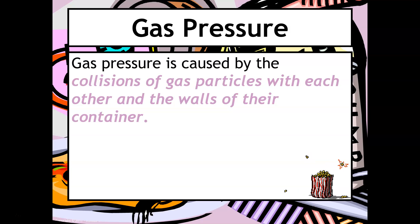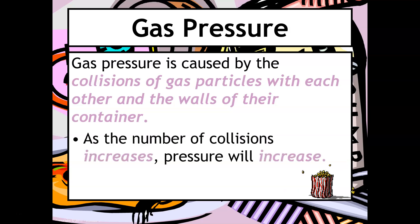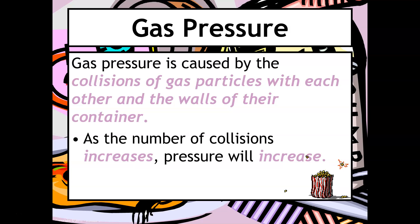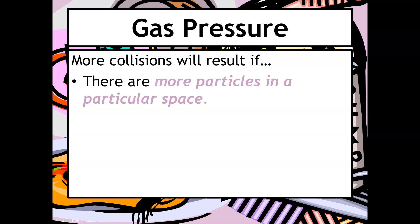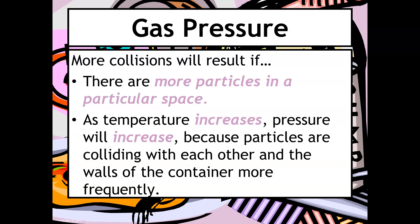Gas pressure is a measure of collisions of gas particles with each other and the walls of the container. As the number of collisions increases, the pressure will increase. The popcorn example in the corner illustrates this — kernels have water inside them, and when put in the microwave that water vaporizes, causing the kernel to pop. You will see more collisions if there are more particles in a space or if you increase the temperature. Increasing temperature increases pressure because particles have more kinetic energy and collide more frequently.